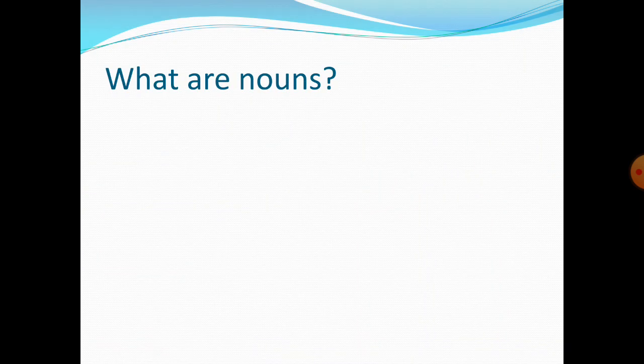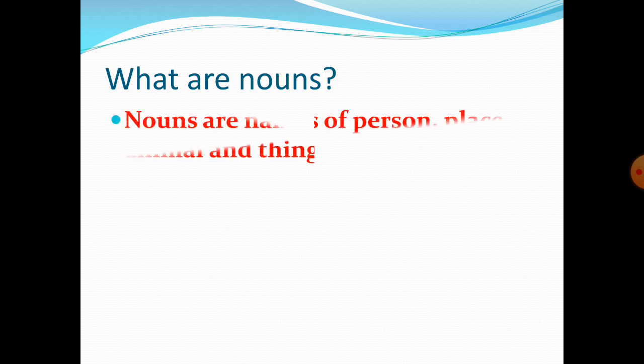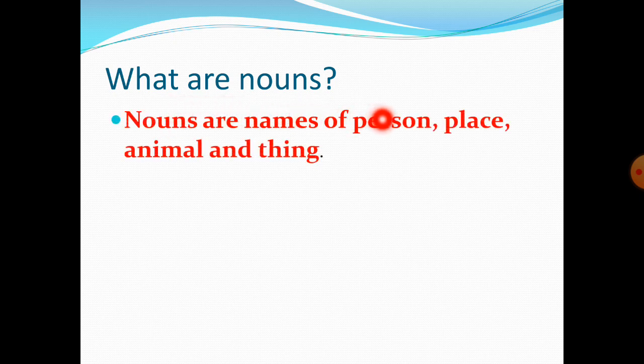First, let us quickly revise what are nouns. Nouns are names of a person, place, animal, and thing.